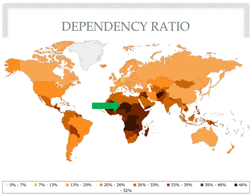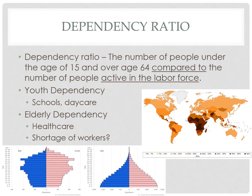Many other African countries, as well as Afghanistan, also have high youth dependency ratios. While in Germany, 21% of its population is over 65 years old, so they have a high elderly dependency ratio and may need more retirement homes and public money devoted to healthcare and social safety nets. Many European countries, along with Canada, Japan, and South Korea, have high elderly dependency ratios. But Japan presents an example of why this measure is imperfect — many elderly people in Japan are still working, so the dependency ratio may overestimate the actual social burden placed on the working-age population.